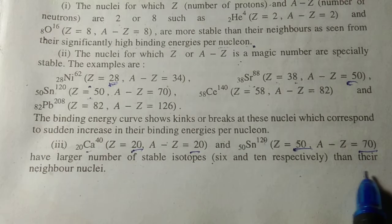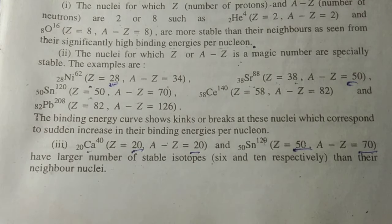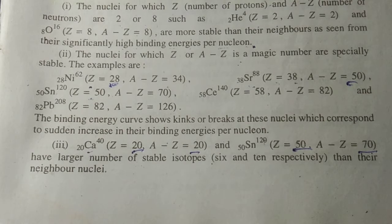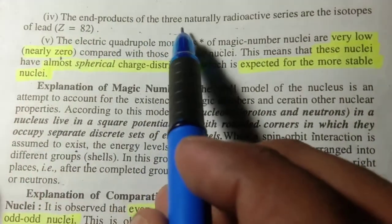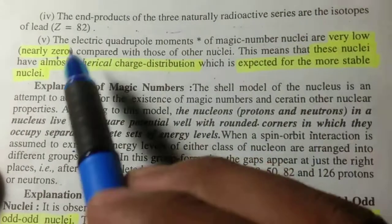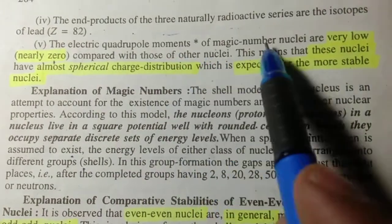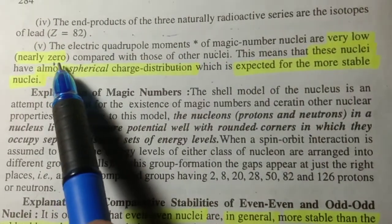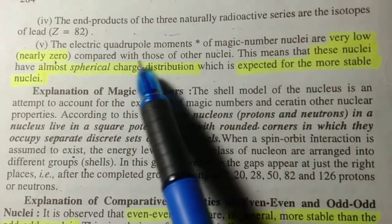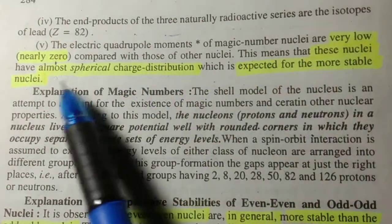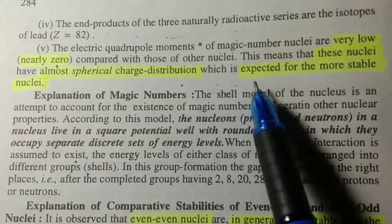For example, there are many isotopes of lead where Z equals 82. The electric quadrupole moment of magic number nuclei are very low, nearly zero. This means that these nuclei have almost a spherical charge distribution, which is expected for more stable nuclei.